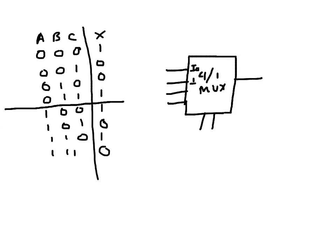The inputs are I0, I1, I2, and I3, and the output is X. Since I have three input variables but only two select pins, I will apply B and C to the select pins. So S1 is connected to B and S0 is connected to C, where B is the more significant one and C is the less significant one.